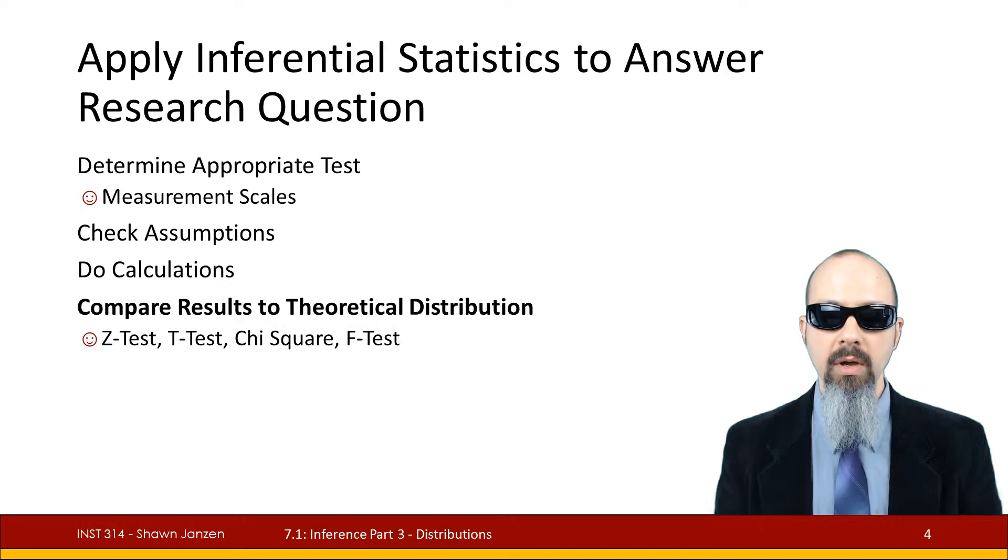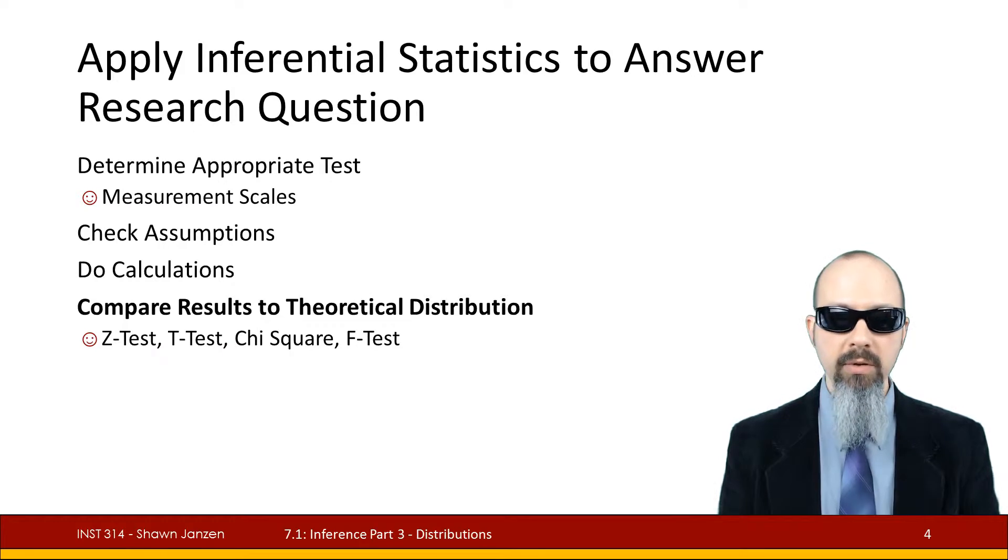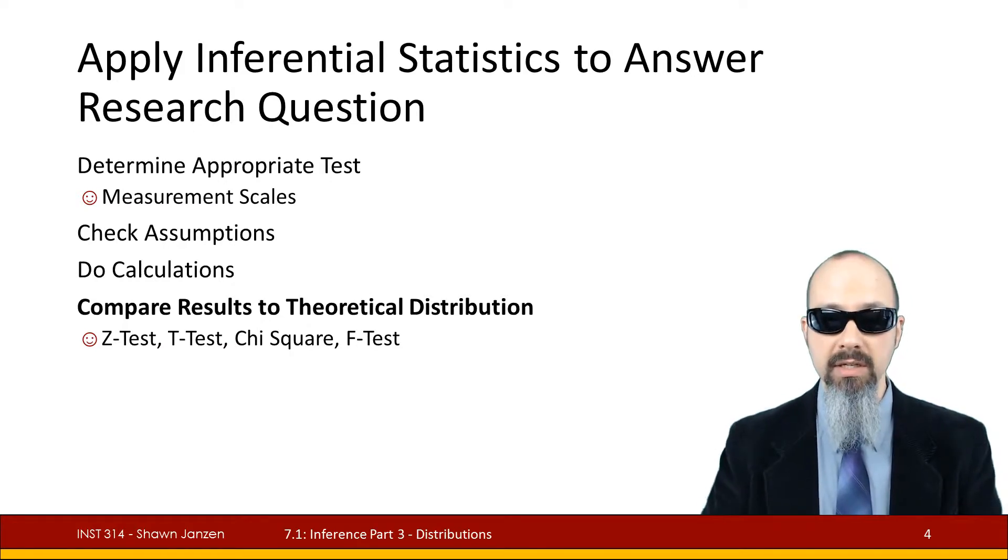And in order to determine which inferential statistical method we should be using, we need to know what kind of variables we're working with. So do you have nominal variables and ordinal that are in the categorical group? Or do you have numerical variables like interval ratio, which can also be discussed as discrete or continuous? These sorts of characteristics about your variables are going to help you determine what types of distributions are most appropriate.